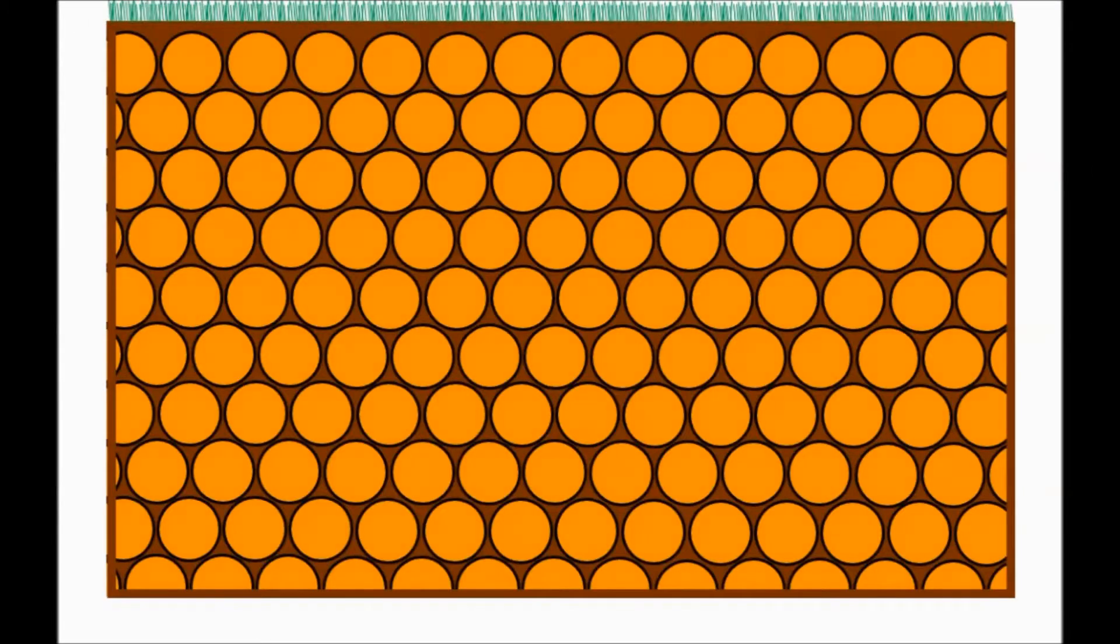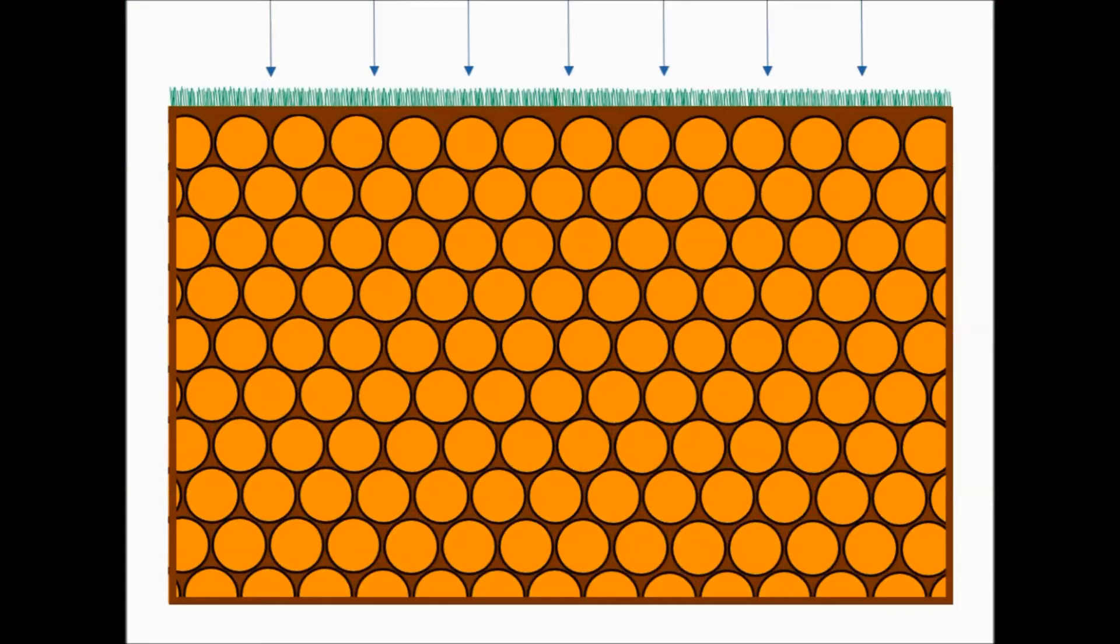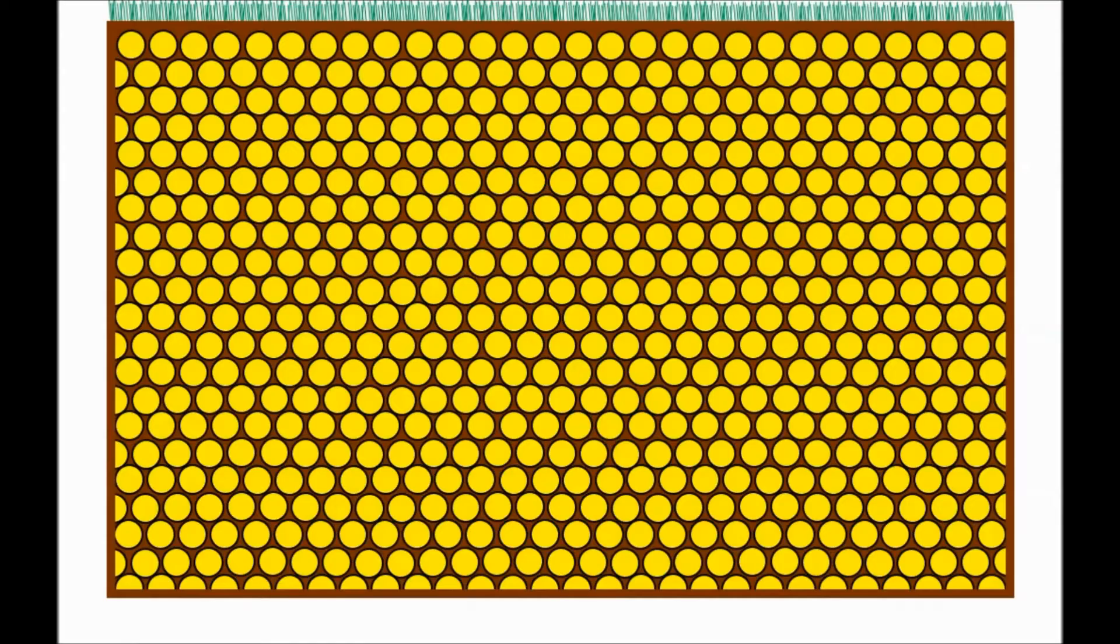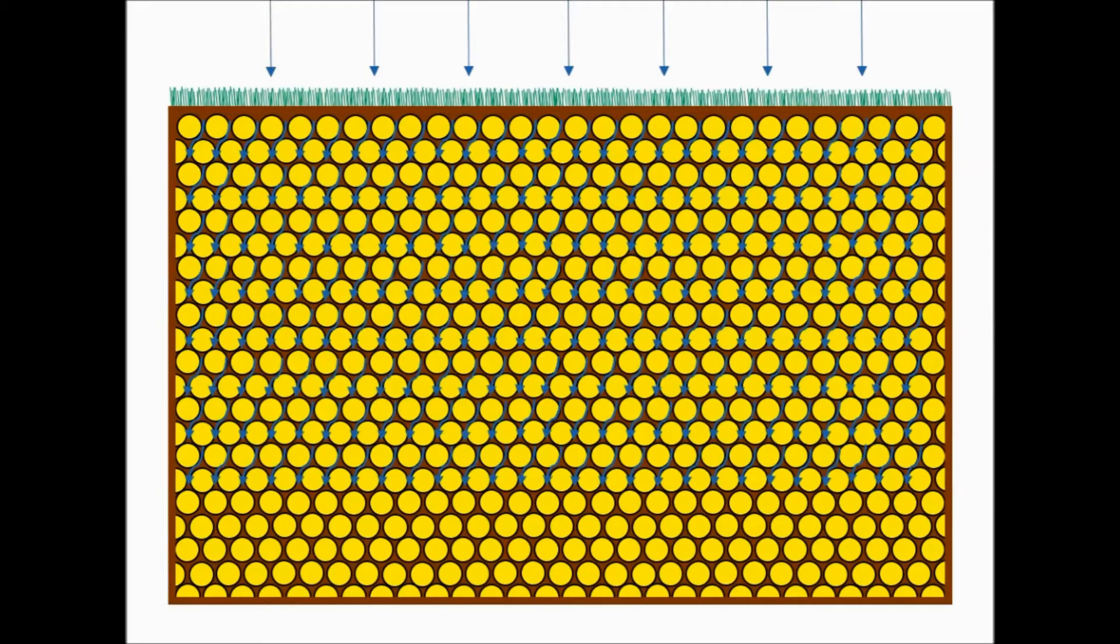Soil particles can be of different sizes. Some are large while others are small. Large particles have larger void spaces through which water can flow easily. They have high permeability. On the other hand, smaller soil particles have smaller void spaces and thus lower permeability.